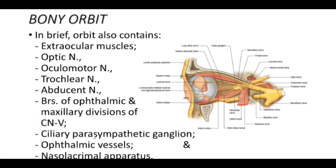The ciliary ganglion lies within the orbital cavity — you can see it here. The short ciliary nerves pass from the ganglion to supply the eyeball, and these short ciliary nerves are responsible for the intrinsic muscles of the eye, that is, the ciliary muscles.